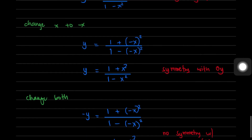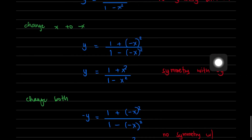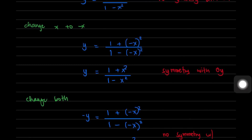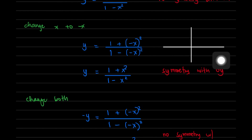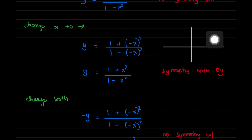When the graph is symmetrical with respect to the y-axis, whatever appears on the left side will be mirrored on the right side.